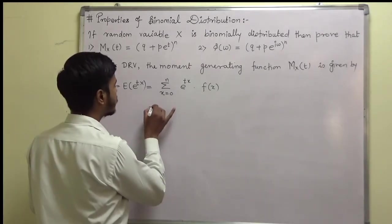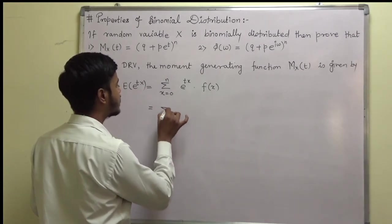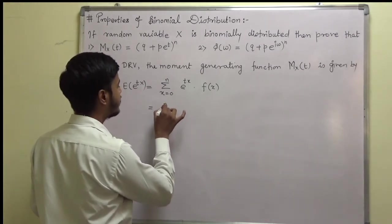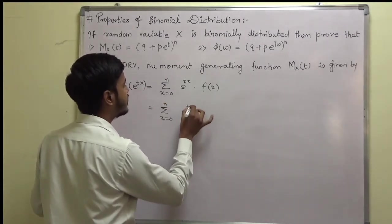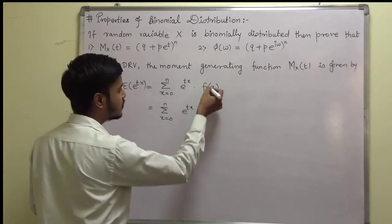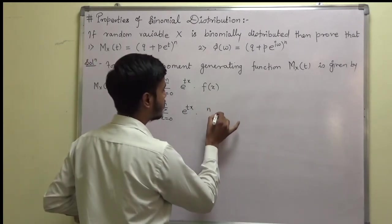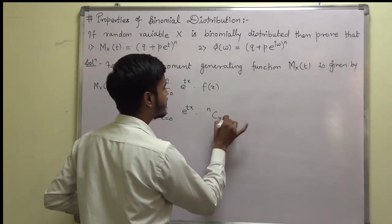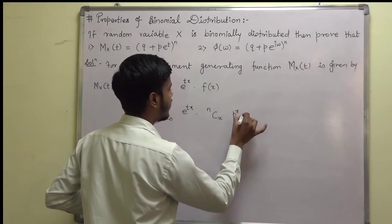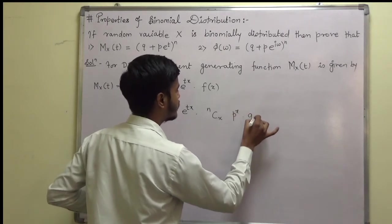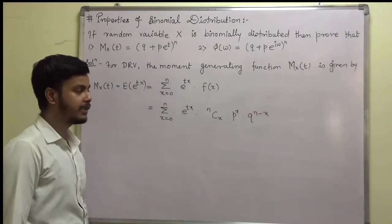So this can be written as summation x = 0 to n of e^(tx) into the binomial distribution term, which is nCx · p^x · q^(n−x).